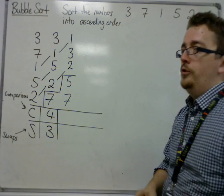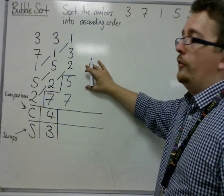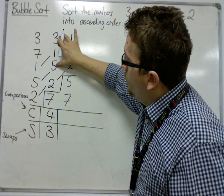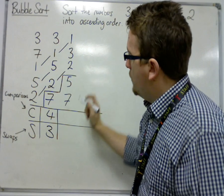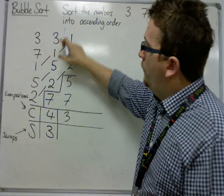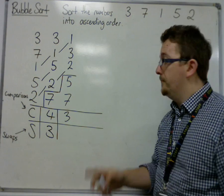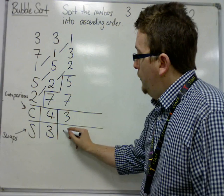So now we count the number of comparisons and swaps we made. So we made 1 comparison, 2 comparisons, 3 comparisons. 4 numbers, 3 comparisons. Can you see a pattern yet? And we made 2 swaps.